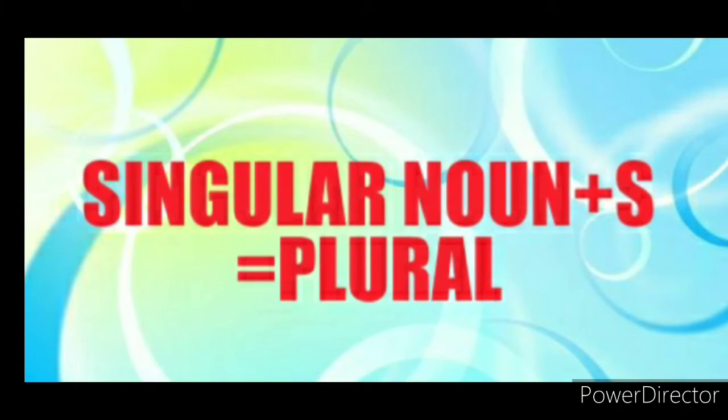As you know, we are covering singular and plural nouns. Singular क्या होता है? जिसको हम single — किसी का भी नाम अगर single होता है, उसको हम बोलते हैं singular noun. और plural noun क्या होता है? अगर वो नाम बहुत सारे होते हैं, तो उसको हम बोलते हैं plural noun. बहुत तरीके से हम लोग singular noun को plural noun बना सकते हैं. We are just making singular noun to plural.